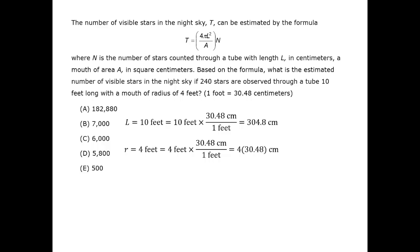We have 4 times 30.48, which we could multiply, but we might not have to multiply these numbers ultimately, so let's not do it too hastily. We now have r, and we can plug that into the formula for area to get the area of the mouth of the tube.